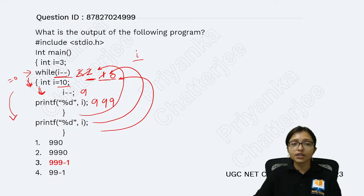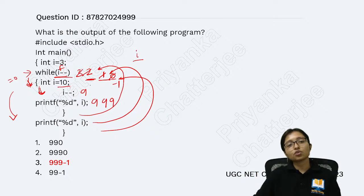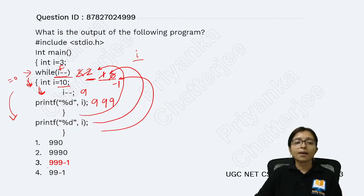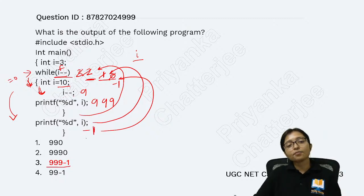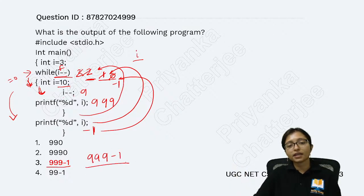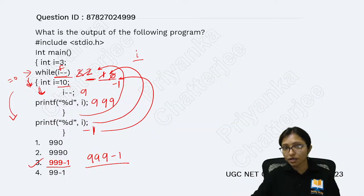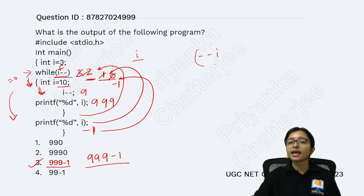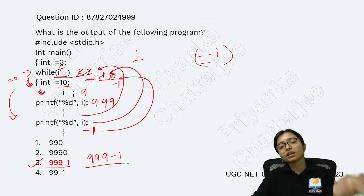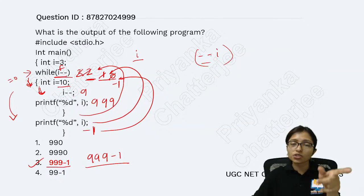Now i is 0 — but since this is post-decrement, the condition already evaluated as true (1 was non-zero), so it enters the loop and prints 9 one more time, then i becomes -1. Now the condition checks 0 (false), and it exits. Wait — it checks 0 as false and exits, but has already decremented to -1. So it prints 9, 9, 9 and then -1 is the final printed value. The answer is 999-1, not 990. This is why post-decrement behaves differently from pre-decrement.